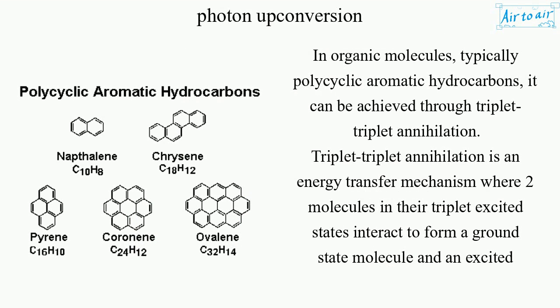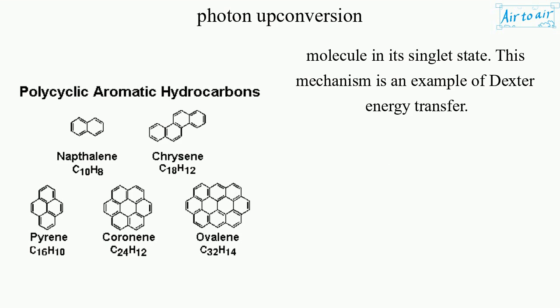In organic molecules, typically polycyclic aromatic hydrocarbons, photon-up-conversion can be achieved through triplet-triplet annihilation. Triplet-triplet annihilation is an energy transfer mechanism where two molecules in their triplet excited states interact to form a ground state molecule and an excited molecule in its singlet state. This mechanism is an example of Dexter energy transfer.